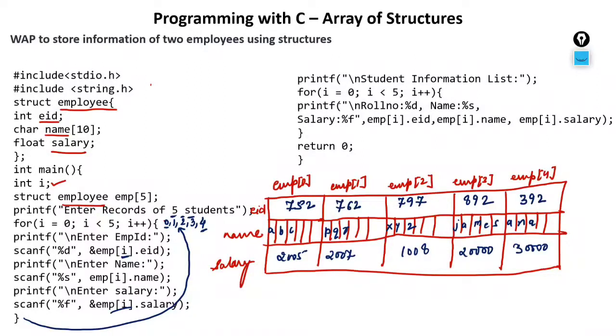So now it will access information from these memory blocks. Student information list. So you will have this line. I is equal to 0. It will start from 0. So what value will it have? 0, 1, 2, 3, 4. And first of all i will be 0, 0 less than 5, yes.